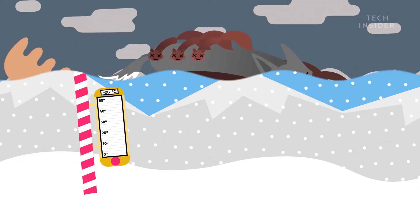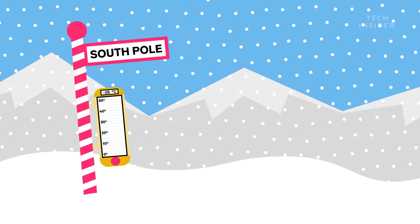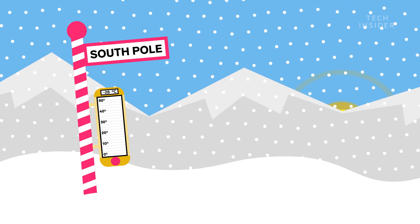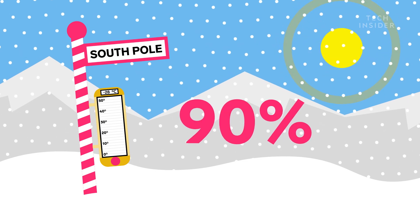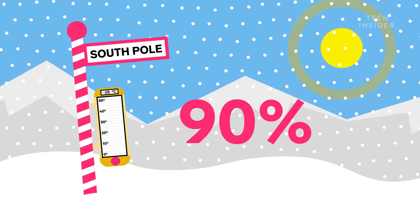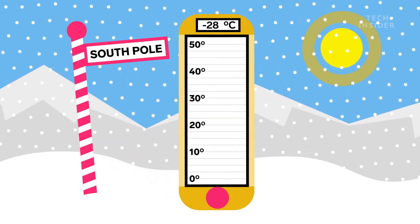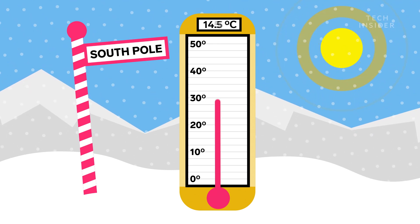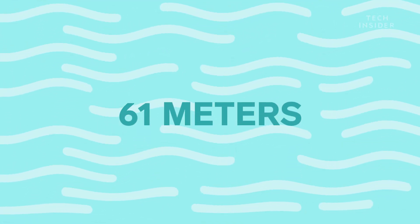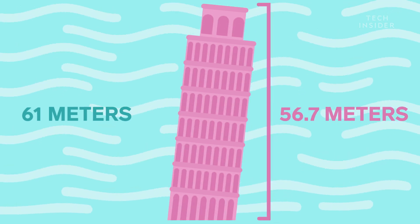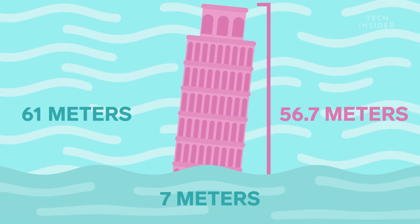And there would be even more floods. Because meanwhile, the southern hemisphere is getting toasty. And the South Pole is home to 90% of the world's ice. The constant sunlight would raise its temperature to 38 degrees Celsius from negative 28 degrees Celsius. Melting the ice and raising sea levels by a whopping 61 meters. That's almost as tall as the Leaning Tower of Pisa. Greenland's flood would look like a puddle in comparison.